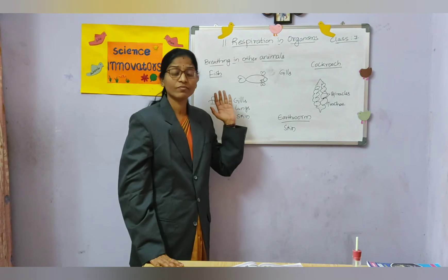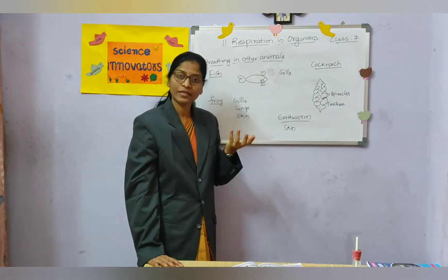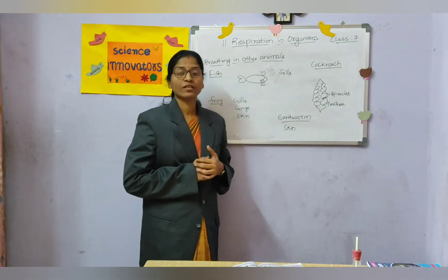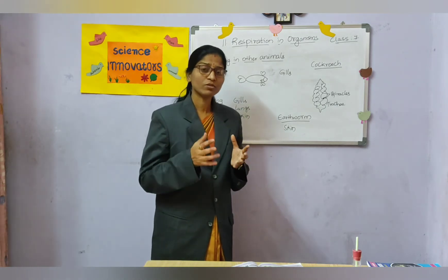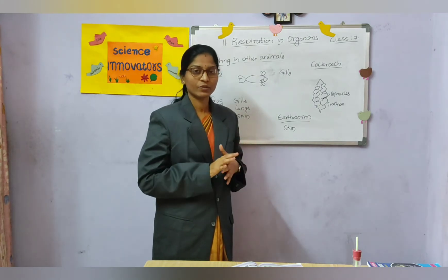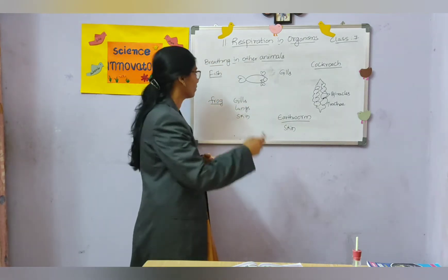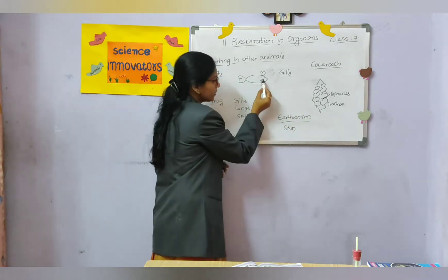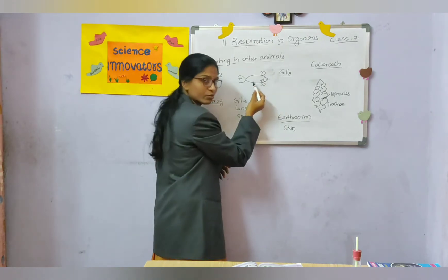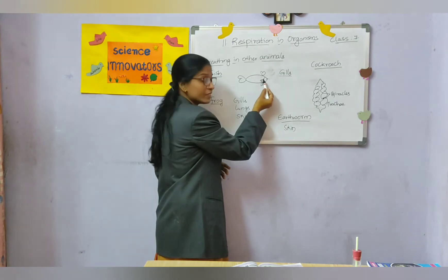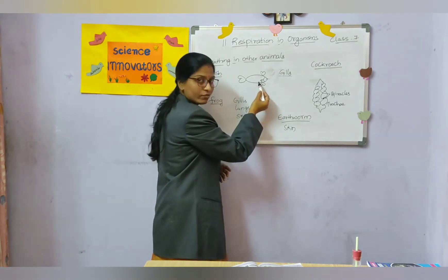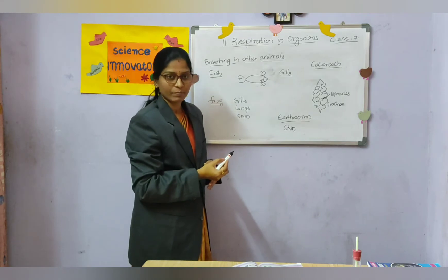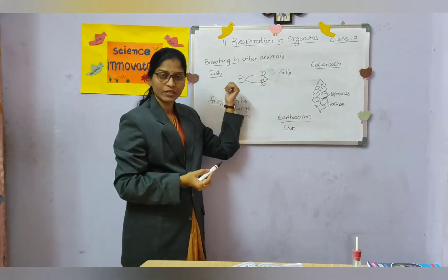Fishes live in water. The oxygen dissolved in the water enters into the fishes. Fishes have gills on either side of the body. Water enters in and out through the mouth, and the oxygen carried with the water into the body of the fish is taken up by the gills, and the respiration process takes place. So gills are the respiratory organs in fishes.